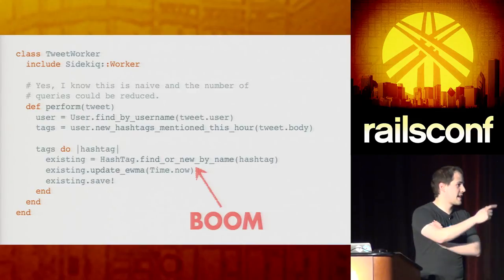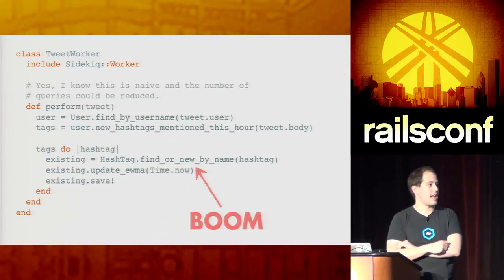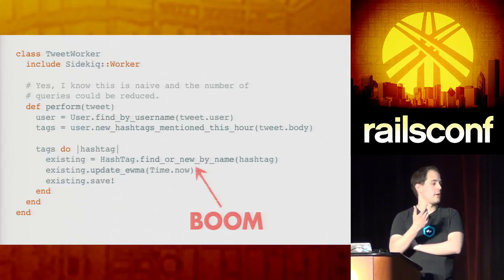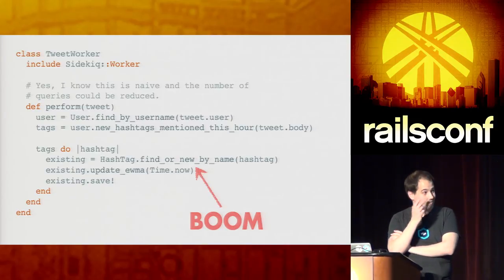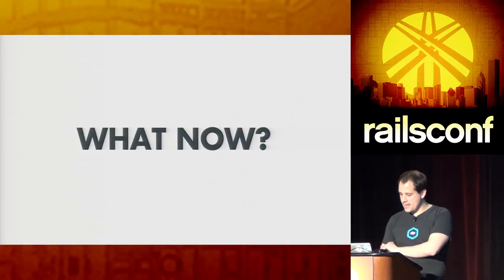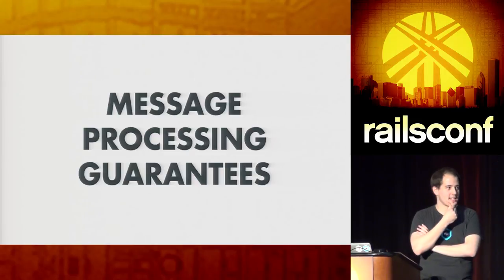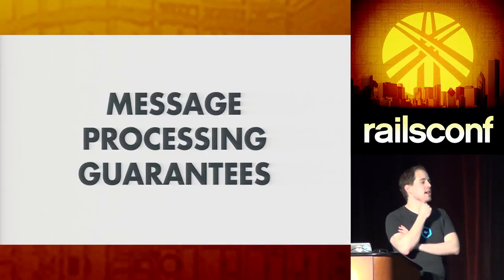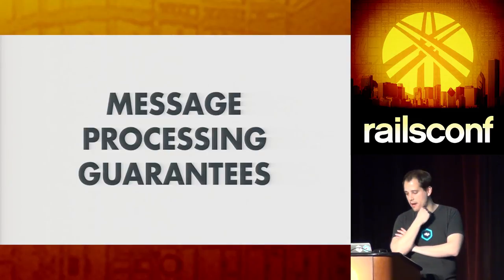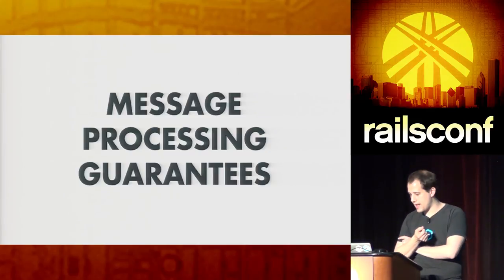Going back to the original Sidekiq thing: what happens if we're halfway through the iteration, and we've persisted some of them, and it just explodes halfway through? Do we retry the message? Generally we have to think about what the message processing guarantees are, because it's going to change how you work with it. The two main ones are: are messages processed at least once, or are messages processed at most once. You can only get one, not the other — you can't get exactly once. If anybody says they guarantee a message is going to be processed exactly once, they're lying — it's impossible.